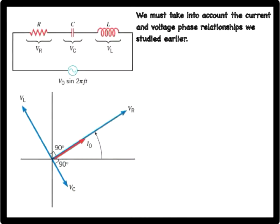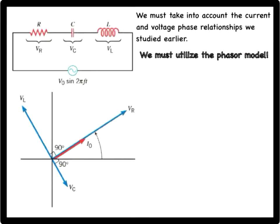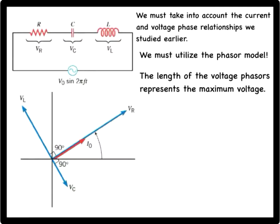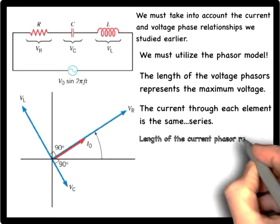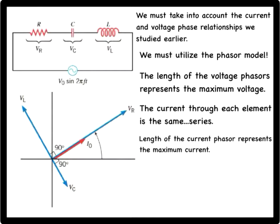The lengths of the voltage phasors in the drawing represent the maximum voltages VR, VC, and VL across the resistor, the capacitor, and the inductor, respectively. The current is the same for each device since the circuit is wired in series. The length of the current phasor represents the maximum current I0.